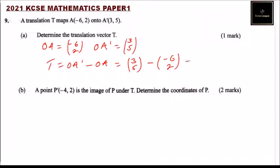Which gives us 3 minus (-6), that will be 9. And 5 minus 2 is 3. So the transition vector T is (9, 3). That's how you do that.